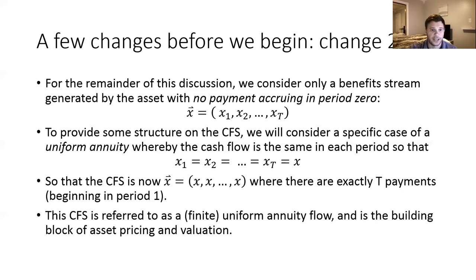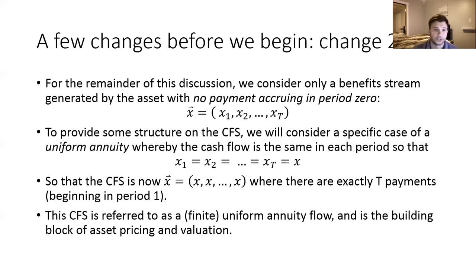This particular structure of a cash flow stream is known as a finite uniform annuity flow — finite because it ends after T periods. It's uniform in the sense that the size of each cash flow payment is equal to each other. Understanding how to price this type of asset is really a core building block with respect to asset pricing theory and valuation.